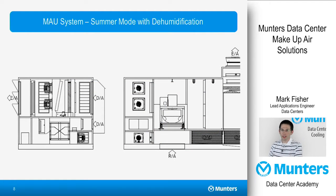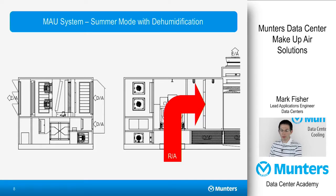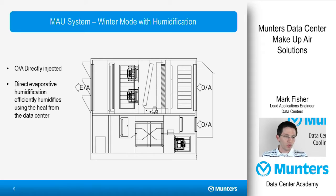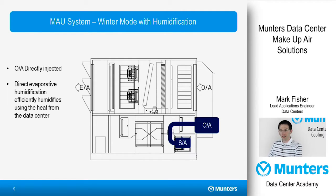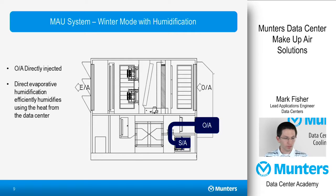Here's how the makeup air module integrates with the main recirculating system. Data hall return air is brought back and the conditioned outside air is injected and mixed with it. In winter mode, the system provides humidification efficiently because the hot air from the data hall is used to drive the humidification process. The cold winter outside air is again filtered and then directly supplied into the recirculating air path. If there is a ringer cycle included, we can provide a bypass damper to reduce the static pressure of that cycle.